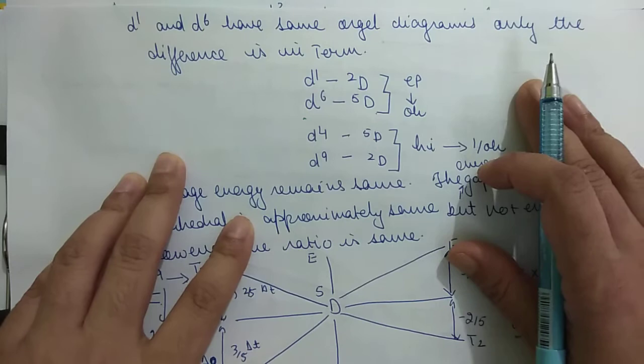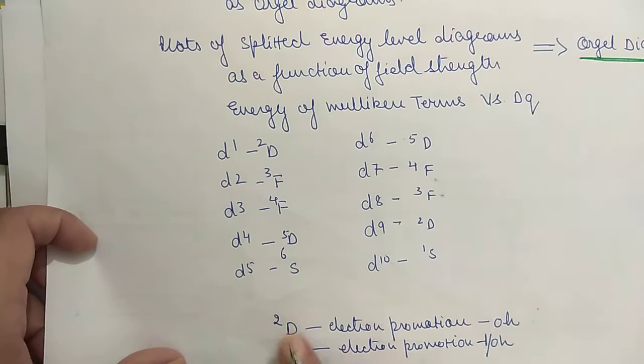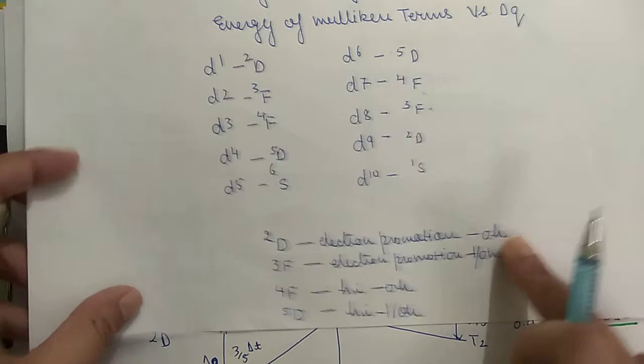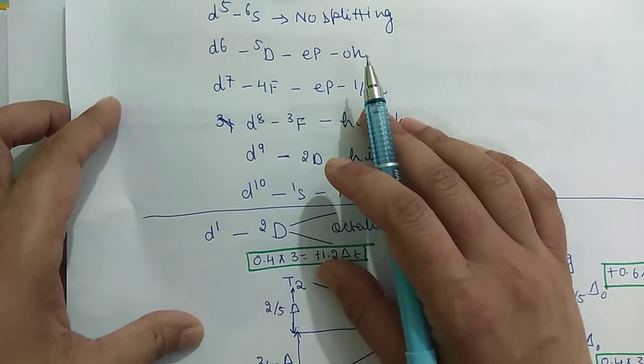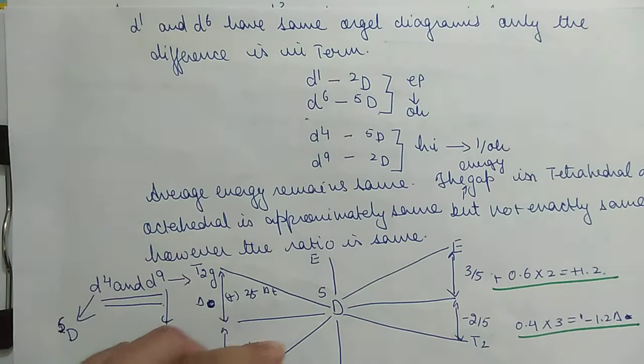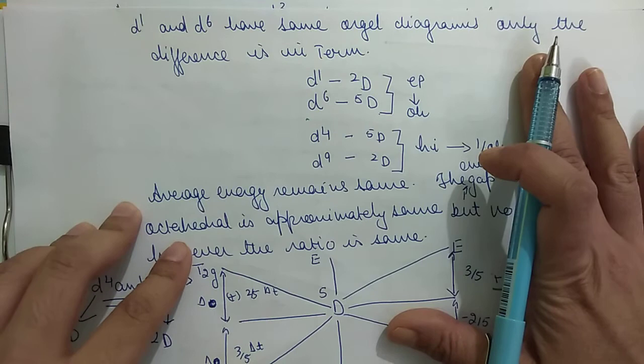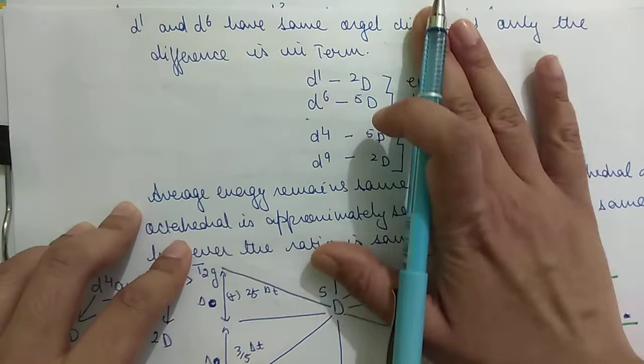An important point to remember: d1 and d6 have the same Orgel diagrams. In d1 the term is 2D with electron promotion and octahedral splitting. In d6 the term is 5D but also involves electron promotion and octahedral splitting — the nature of splitting is identical. The only difference between their Orgel diagrams is the term symbol written (2D versus 5D). Similarly, we can see the same relationship for d4 and d9.